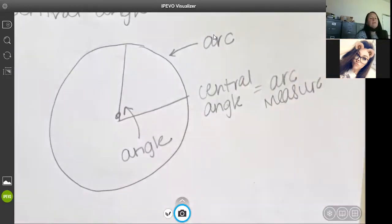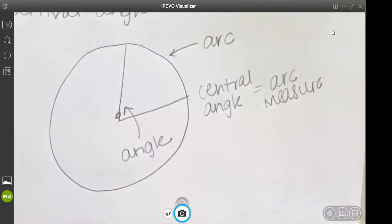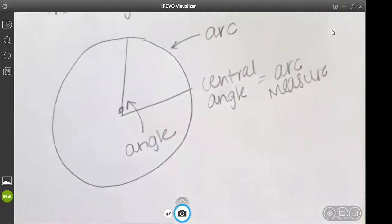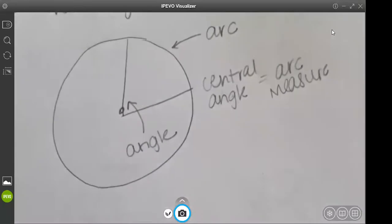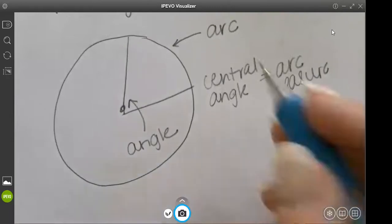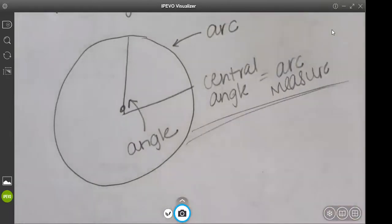So we're going to have a circle. A central angle has its point or its vertex on the center of the circle. That would be a central angle. Your central angle equals your arc. So I'll tell you what that means.